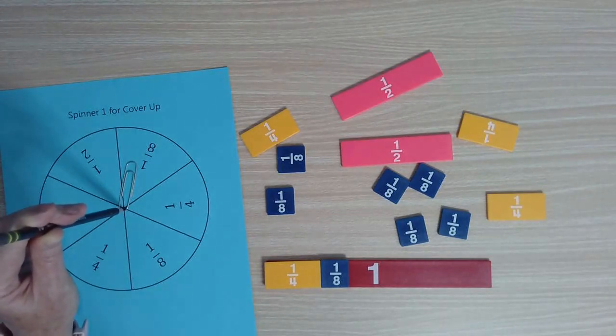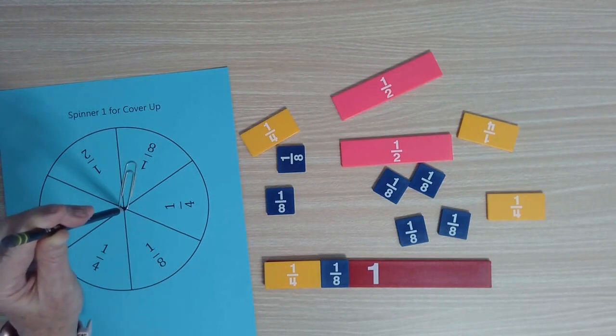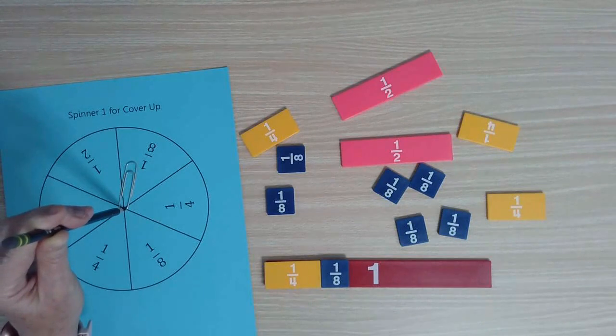The students obviously see that one-fourth is greater, and then the question could be, well, isn't that interesting? Because I think of eight as being larger than four, so how come one-fourth is greater than one-eighth?